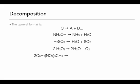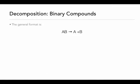A more complex decomposition example is TNT — trinitrotoluene. Two molecules of TNT will decompose into three molecules of nitrogen, five molecules of water, seven molecules of carbon monoxide, and seven atoms of carbon. This is one of the reasons why TNT is such an explosive — it produces all of these gases from just two solid molecules.